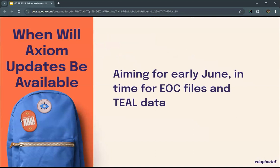Answering the biggest question first — when will Axiom be available? We're aiming for early June. Your EOC preliminary files using the full TXT format will be available in early June. Also, sometime in early to mid-June, all of your TEAL data for CCMR and graduation-type data will be available, and we'll show you how to enter that into the system.